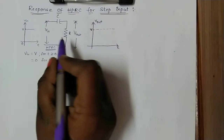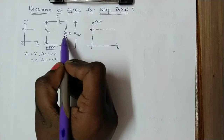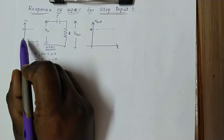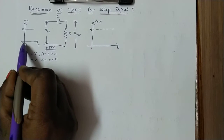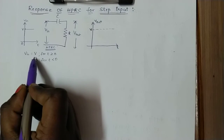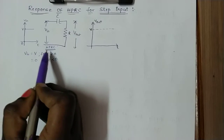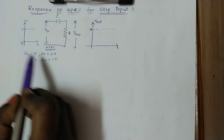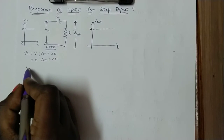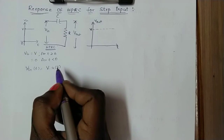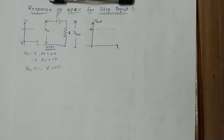This is the circuit diagram of the HP RC circuit with capacitor C and resistor R. We are applying the input here and collecting the output across the resistor. The input we are applying is a step signal. The mathematical equation of the step signal is: V input equals V volts for T greater than or equal to 0, and 0 for T less than 0. So V input of T equals V into U of T.